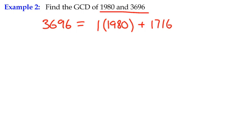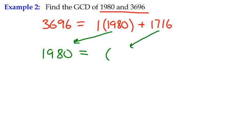We're going to repeat that because our remainder is not zero. As a reminder: we take the divisor and move it over to become the new dividend, and we bring the remainder over as our new divisor, 1,716, and repeat the process. So we get how many times 1,716 goes into 1,980 — once again, 1 time — giving a remainder of 264.